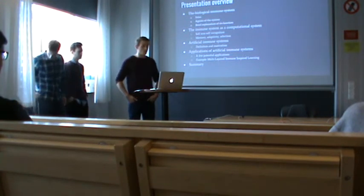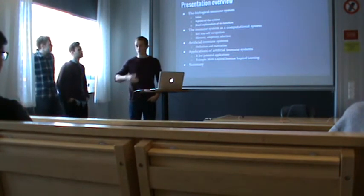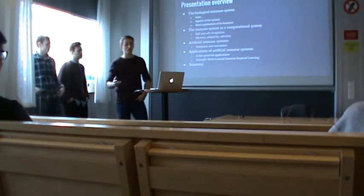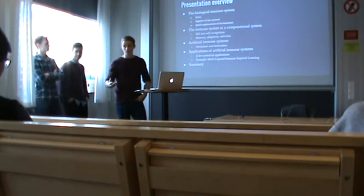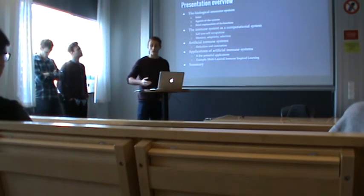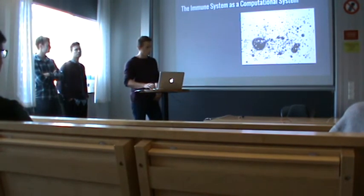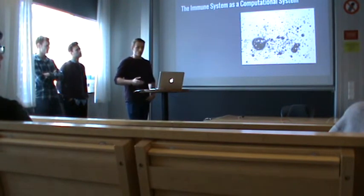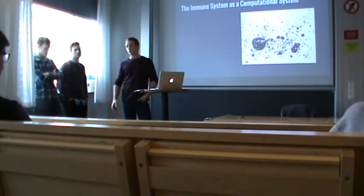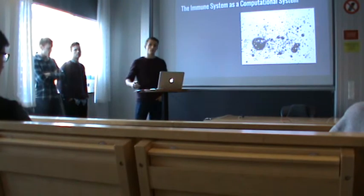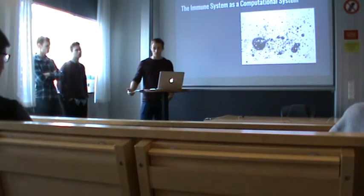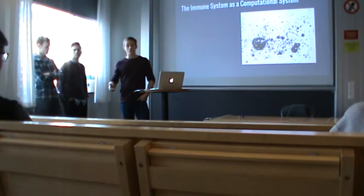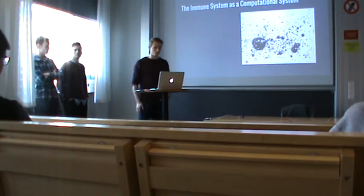Now that we have a brief overview of the biological immune system, we'll continue to explain why the immune system is a computational system and how we can draw inspiration from it to come up with novel algorithms. Even though it might not seem obvious at first, by most formal definitions the immune system is a computational system, able to perform many computationally complex tasks. This is why engineers and computer scientists have looked to this system for inspiration when trying to solve problems.